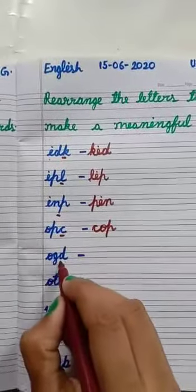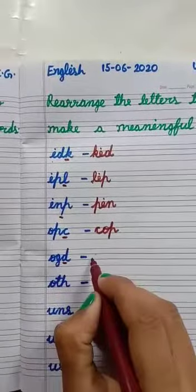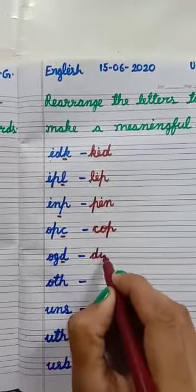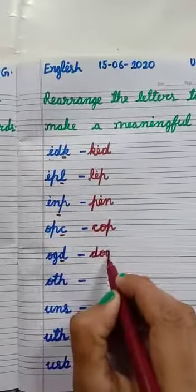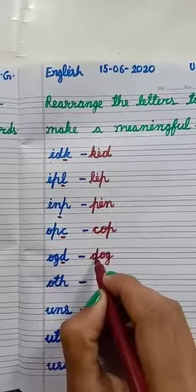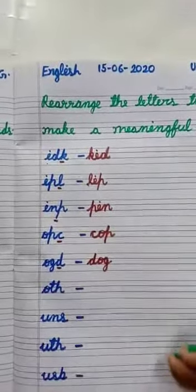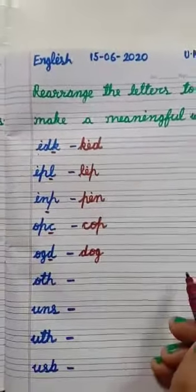The letters are O, G, D. First, I have written D, then O, then G. D, O, G — Dog. Dog is a meaningful word.